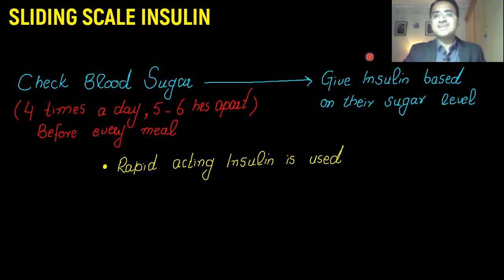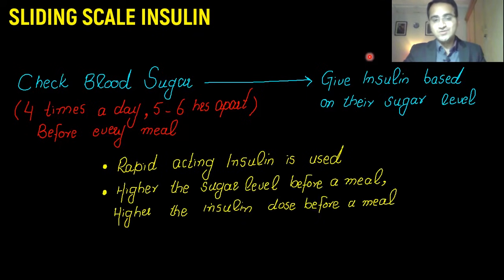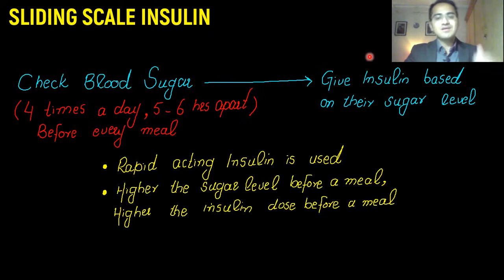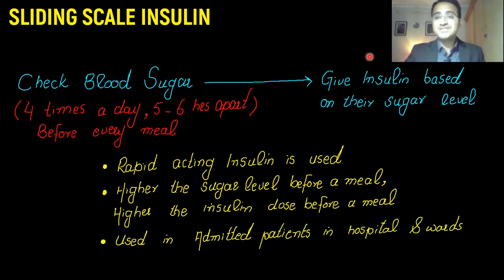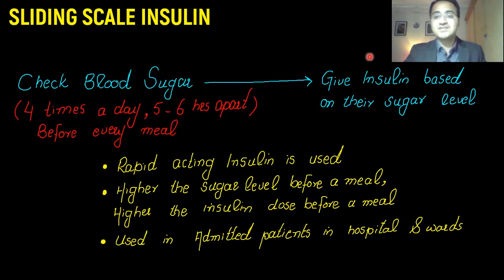Rapid-acting insulin is used. The higher the glucose level before a meal, the higher the insulin dose will be given. This method is mainly used in admitted patients — patients that are in hospital wards.